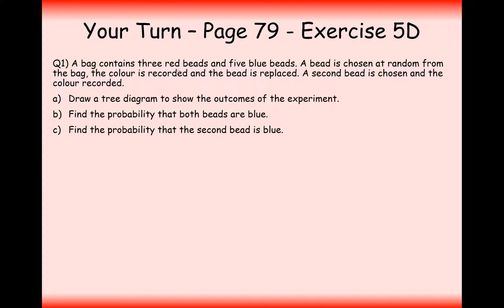So a bag contains three red beads and five blue beads. The bead is chosen at random, the colour is recorded and the bead is replaced. The second bead is chosen from the bag. Draw a tree diagram to represent this information. So it would be three out of eight along this branch here and five out of eight along this branch here.